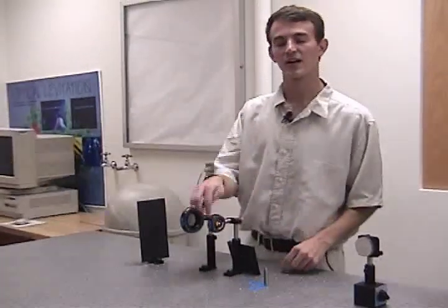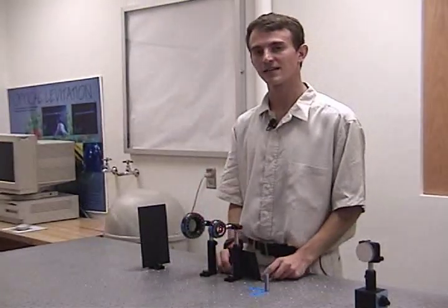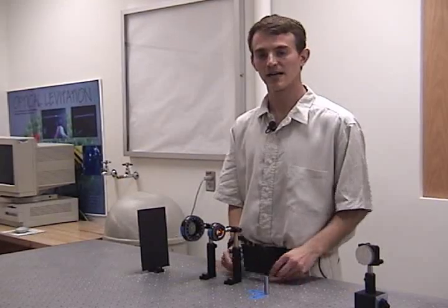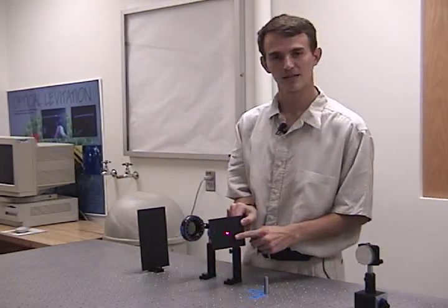By reading the angles from these two devices, we can determine the helicity, the ellipticity, and the orientations of the major and minor axes of the elliptically polarized light.